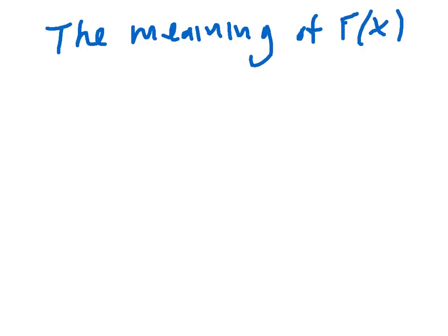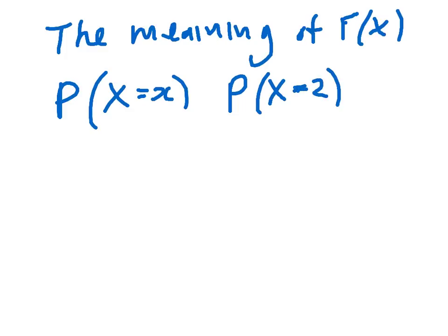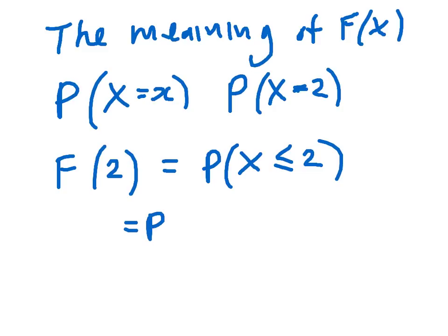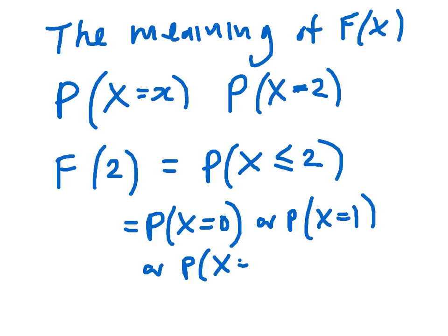So we're now going to look at something slightly different. Look at the meaning of F(x). So far, we know the probability that x equals little x means that x takes a particular value. So we've looked at, for example, probability that x equals two when we throw three coins. F(2) means the probability that x is less than or equal to two. So in the context of our previous problem, this means, then, what's the probability that x equals either zero or one or two? So we'd simply add those three probabilities together. So it's an accumulation of probabilities up to and including the values. So F(2) is the probability that x is less than or equal to two.